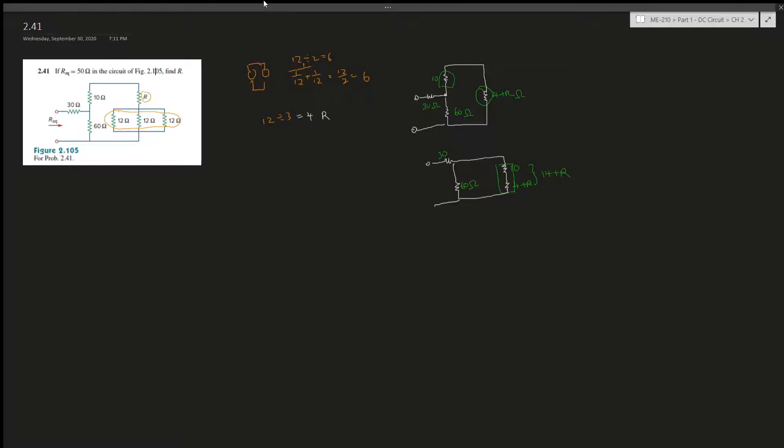Okay, we can combine these together to be 14 plus R. And then now we know that the 14 plus R and 60 are in parallel. So we're just gonna write it out how we usually will solve it.